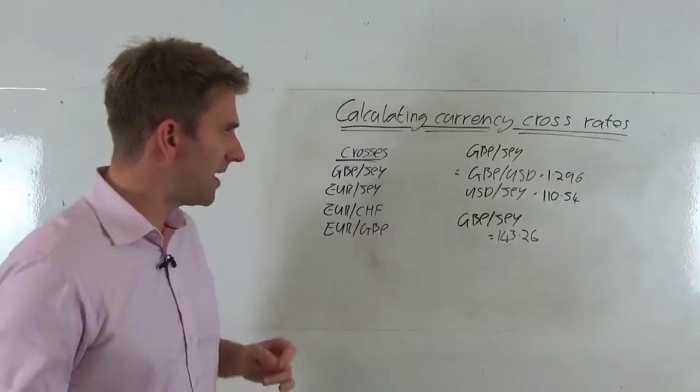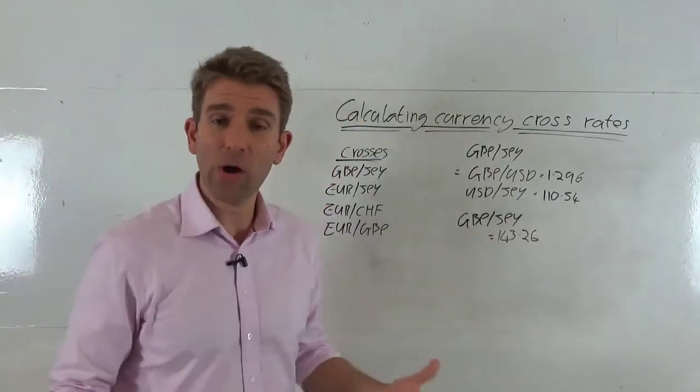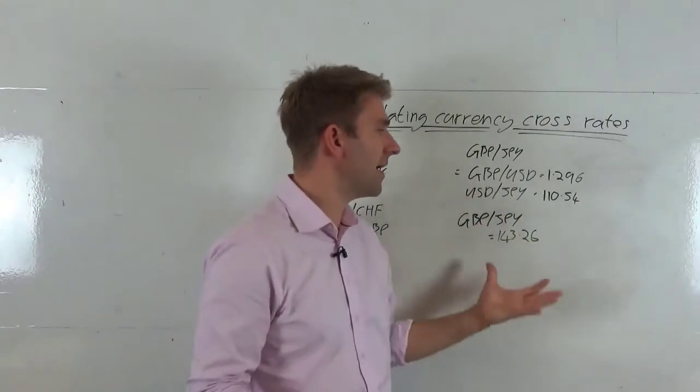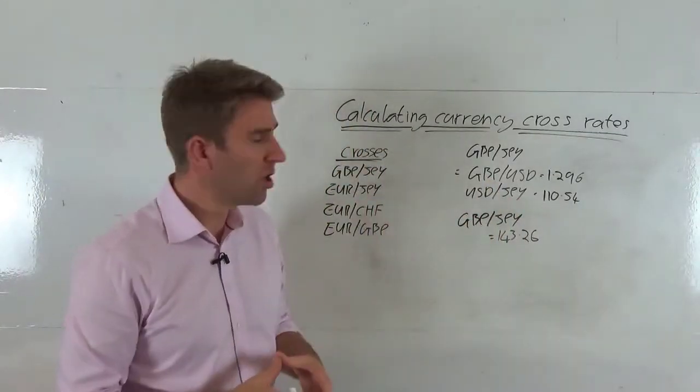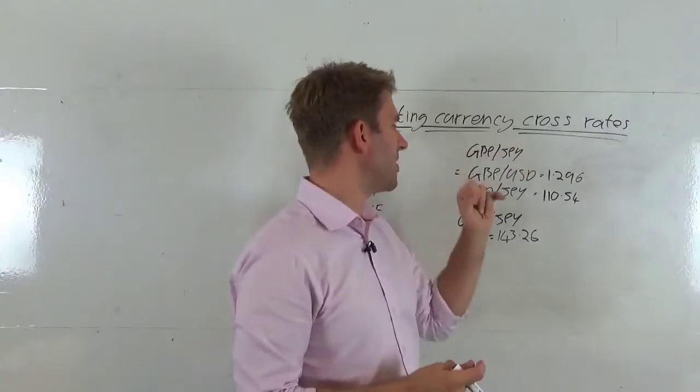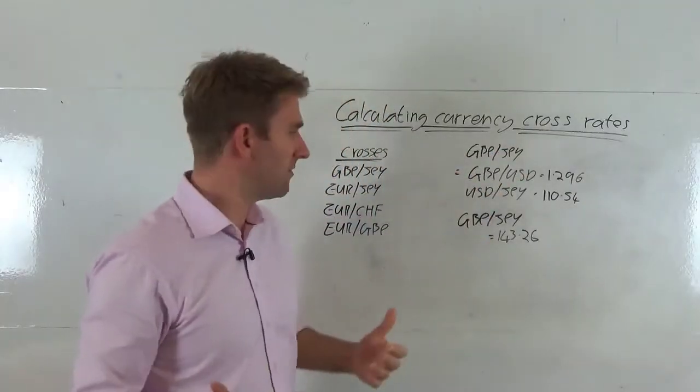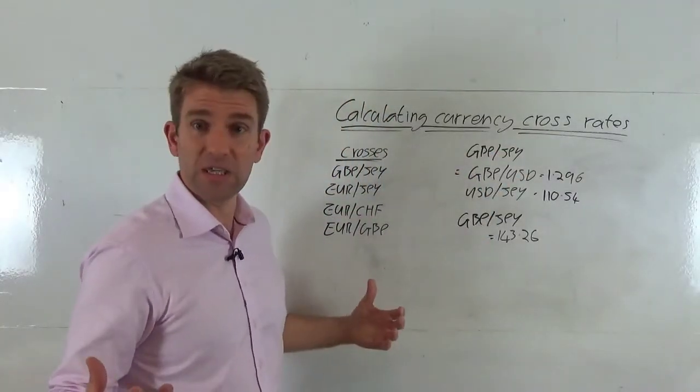So let's go over here and let's work out how we would calculate that, how the cross pair is calculated and how this kind of whole triangle situation works. So GBP/JPY, we've got pounds, we want to convert them into yen. What's the exchange rate for that?